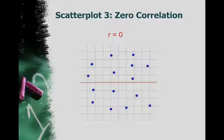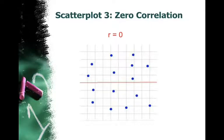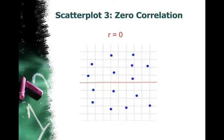If your correlation is 0, all it's going to look like is a cloud of points — you can't tell much of a direction. When you have zero correlation, you're just going to have some scattered points, and there is no relationship between x and y.